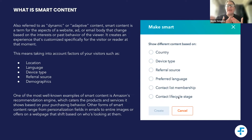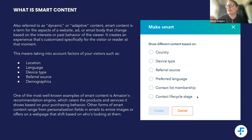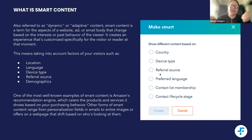If you're making content smart in an email, you only have the choice of list membership or lifecycle stage, because the others are not possible to be determined by the cookies in an email. So in an email, you have fewer options.